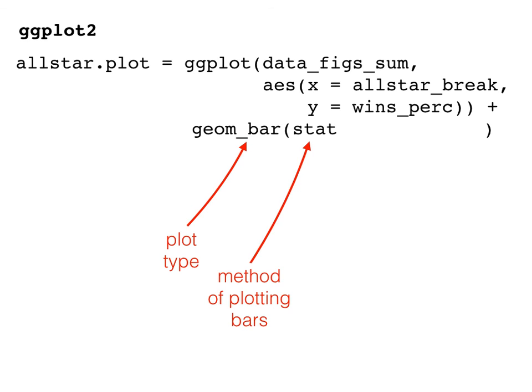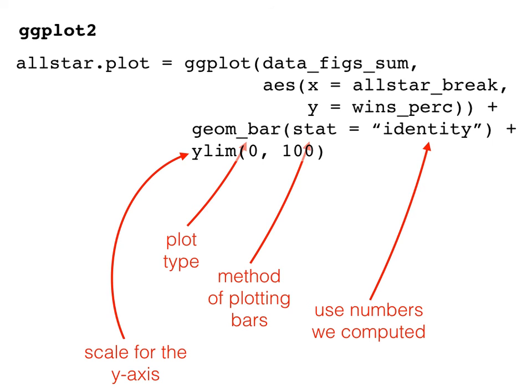One is to add up all the occurrences of each of the levels and plot that. But we earlier computed the exact numbers we want to plot. So, by setting stat to identity, we tell R to use the specific numbers provided. Lastly, we add a scale so that our y-axis ranges from 0 to 100%.